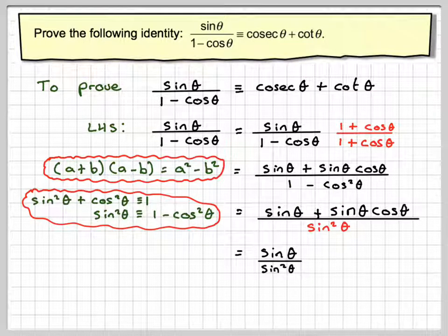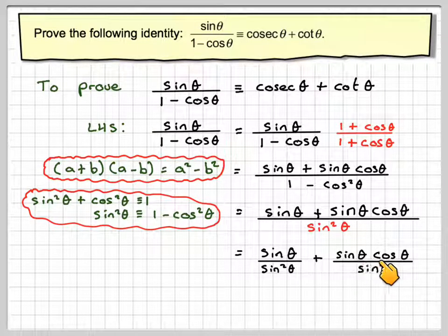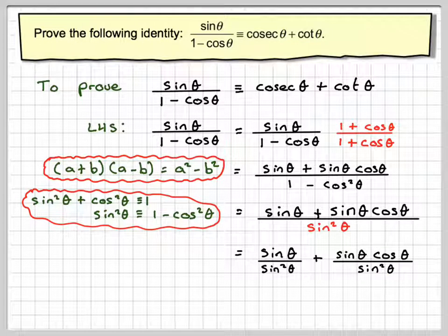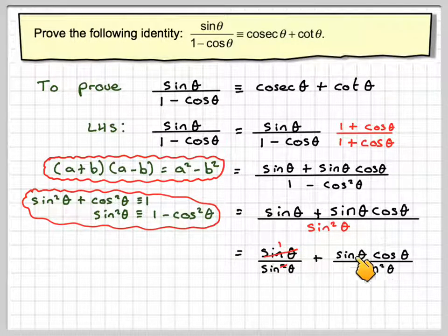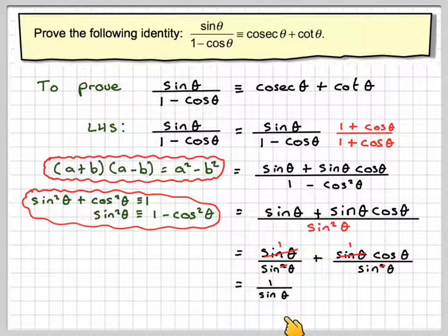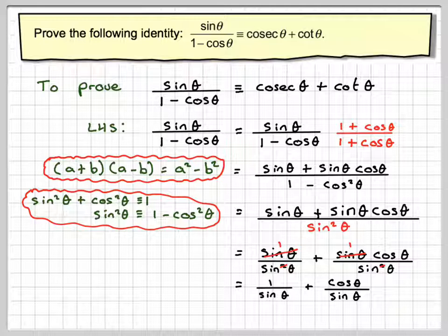Separating up the fractions, we've got sine theta over sine squared theta, plus sine theta cos theta over sine squared theta. Obviously these now cancel — that squared sine cancels with that single sine, giving 1. And again, that squared sine cancels with that sine theta, giving us cos theta over sine theta. Writing that out, we get 1 over sine theta plus cos theta over sine theta.